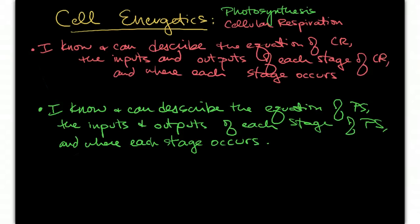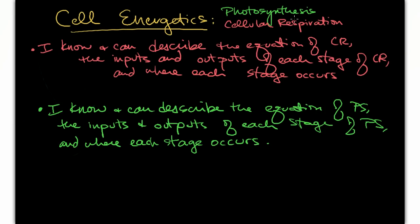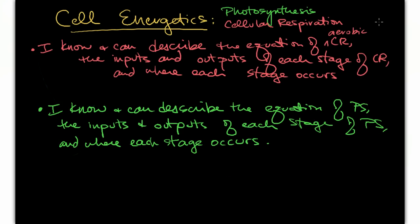Welcome to the next episode in our cell unit. This unit is on cell energetics, focusing on photosynthesis and cellular respiration, which we've alluded to and you have a web quest on that you've already completed. This is just going to give you a few more details than the web quest did. These are the two targets that you should be able to define and meet by the end of this. I want you to add a word here: aerobic cellular respiration. We're talking about aerobic respiration in this podcast. Ask me about anaerobic in class. Jot that down, pause it if you need to, and let's get started.